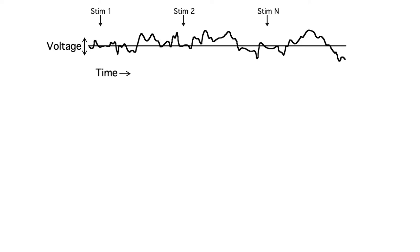First, we grab the period of EEG following each stimulus. This is called segmenting the EEG. Each segment is called an EEG epoch.